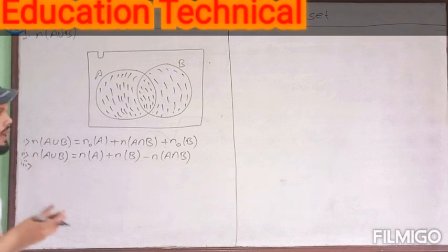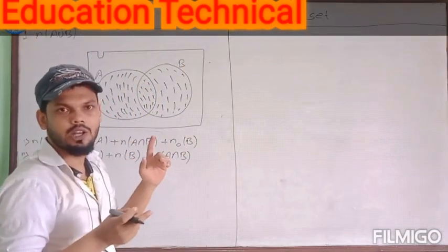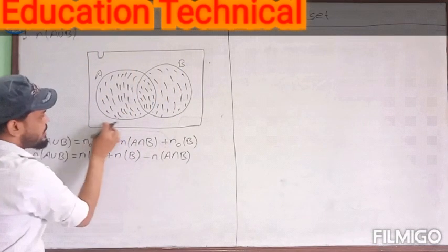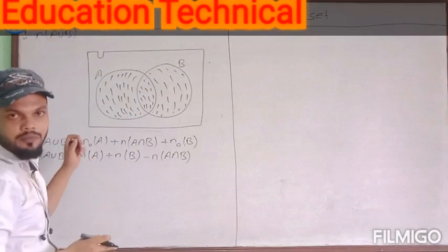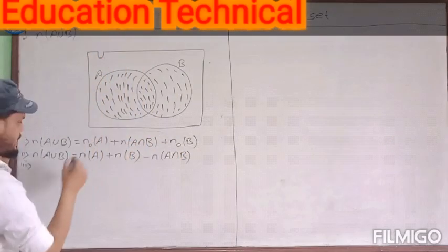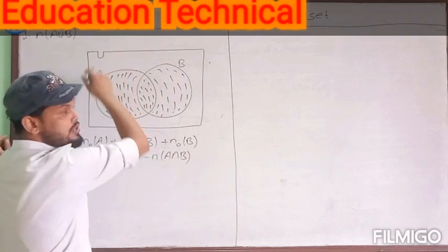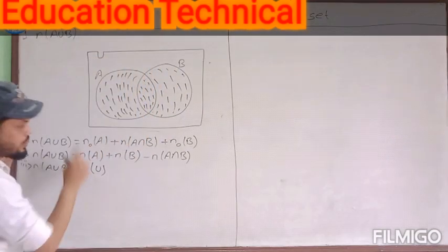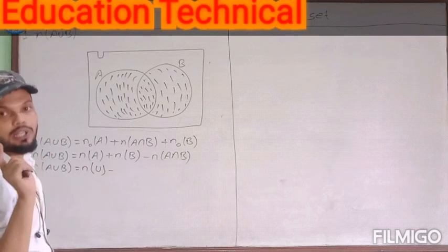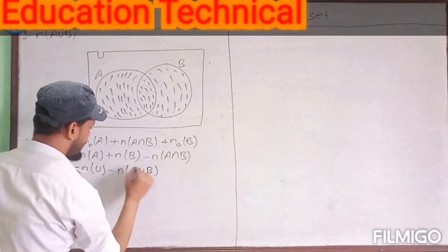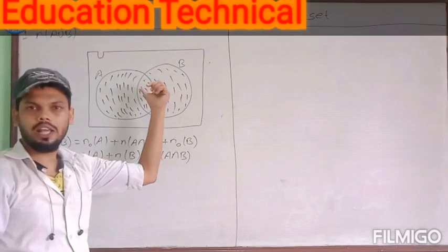The third formula: if we consider the entire universal set, which is the whole rectangular region N(U), and subtract the portion outside the union — that is the complement of A ∪ B — we obtain the union. So: N(A ∪ B) = N(U) − N(A ∪ B)ʹ. These are the three formulas for N(A ∪ B) in the overlapping set case.